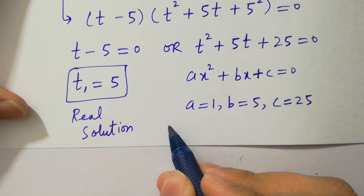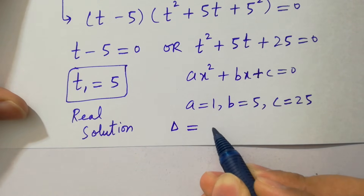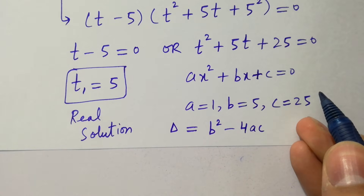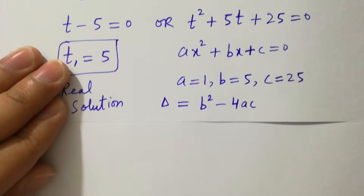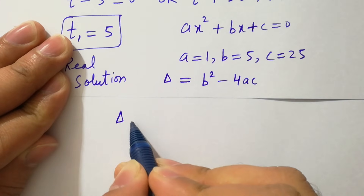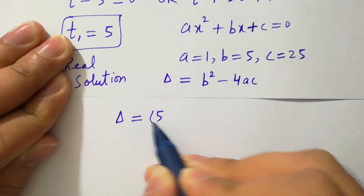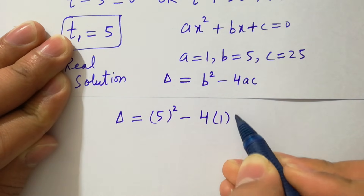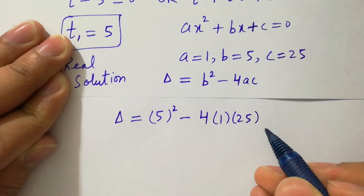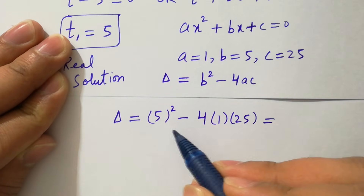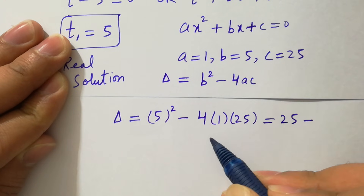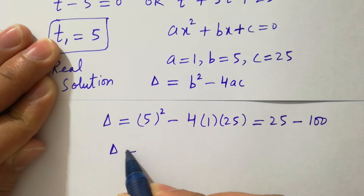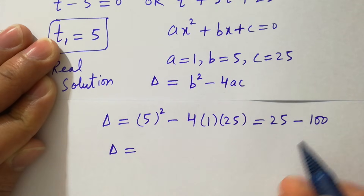We can find the discriminant, which is equal to b squared minus 4ac. With b equal to 5, a equal to 1, and c equal to 25, we have 25 minus 4 times 25 equals 25 minus 100, so the discriminant is minus 75.